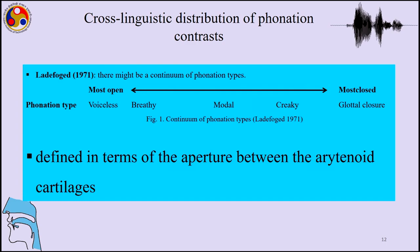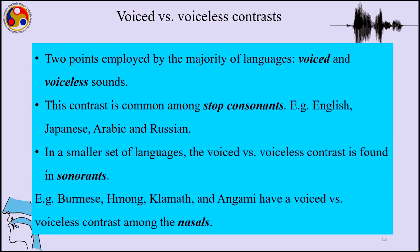In between voiceless and modal voicing — between 'purr' and 'burr' — we can have breathy sounds where the aperture is not as open as voiceless but not as closed as modal, and there can be some amount of noise called breathiness. Between glottal closure for a glottal stop and modal voicing, we can have creaky phonation. So between voiceless, modal, and glottal closure we can have two very distinct phonation properties. Languages of the world contrast based on those intermediate points in the continuum of phonation types.